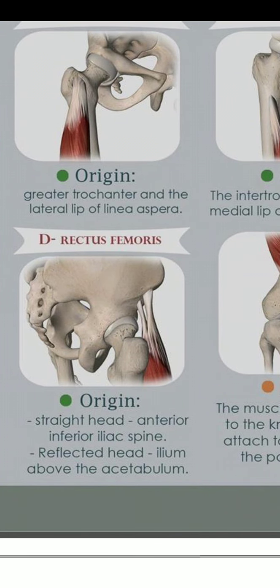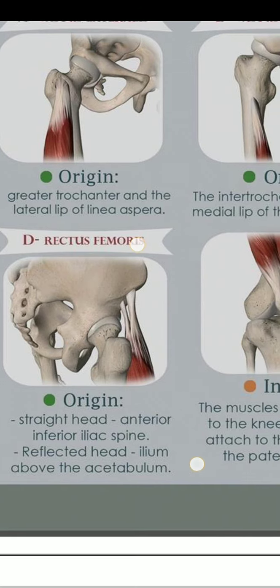The last of the four quadriceps muscles is the Rectus Femoris, which has two heads: a straight head and a reflected head. The straight head originates from the anterior inferior iliac spine (AIIS).